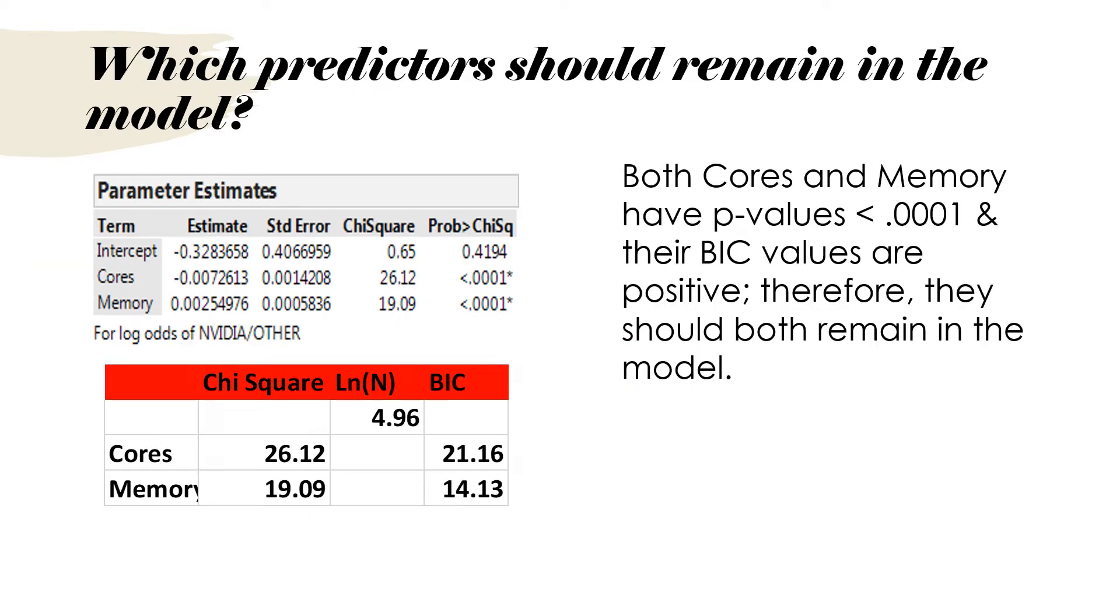Now we want to know which one should remain in the model. So I look at the p-values again for the chi-square statistic for each of the variables. Core's p-value is less than .0001 and also for memory. So we're going to keep both variables in the model.